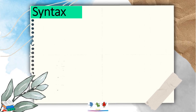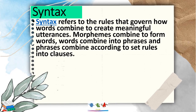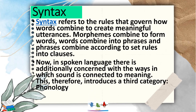Then we proceed to syntax. Syntax refers to the rules that govern how words combine to create meaningful utterances. Morphemes combine to form words, and words combine into phrases, and phrases combine according to set rules into clauses. Now, in spoken language, there is additional concern with the ways in which sound is connected to meaning. This, therefore, introduces the third category, which is phonology.